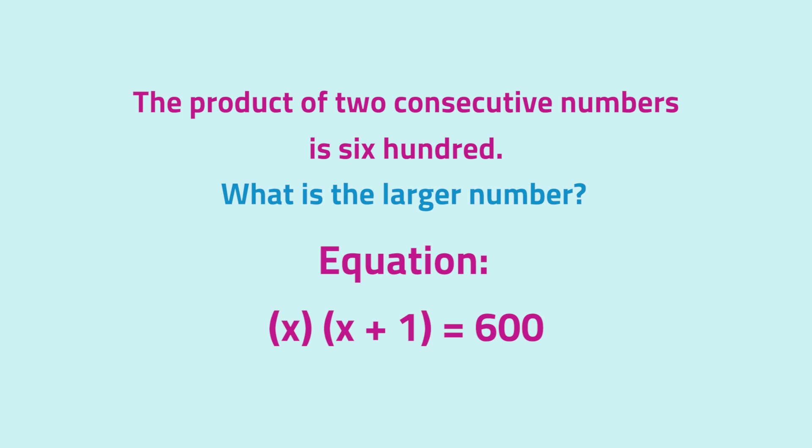As you can see, we need to further expand the left-hand side of the equation. So let's distribute x to x plus 1. After distributing x, we get the equation x squared plus x equals 600.